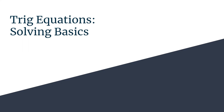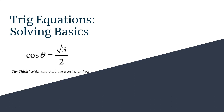In today's Solving Basics for Trig Equations, we're going to solve the equation cosine theta equals the positive square root of 3 over 2. Our note to ourselves is to think which angle or angles have a cosine of square root of 3 over 2. If you are familiar with finding exact values, this process for solving equations is very similar — you're just working in the other direction.